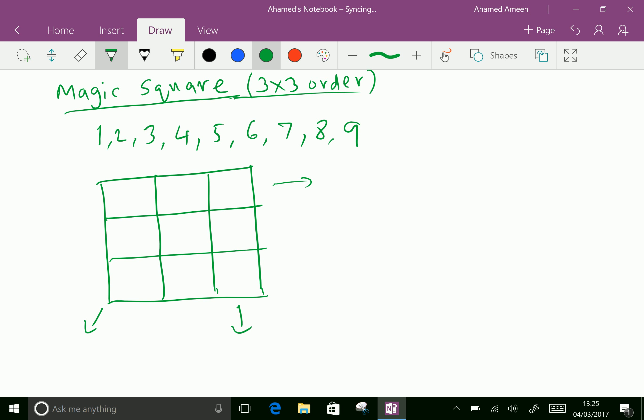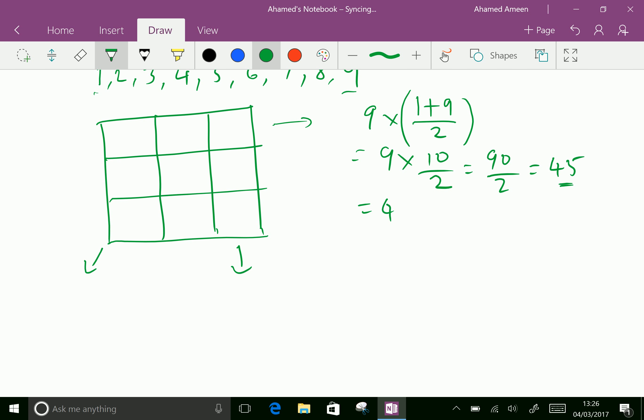That is, let us call it the magic number. First add 1 to 9. How to add 1 to 9? Easier way is take the first number is 1, the last number is 9, and both divided by 2, which is multiplied by the number of numbers, which is 9. That is equal to 9 into 10 over 2, which equals 90 over 2, and 45. This 45 should be filled in each. The 45 is split for 3 rows or 3 columns. That is, 45 divided by 3 is 15, which is our magic number.